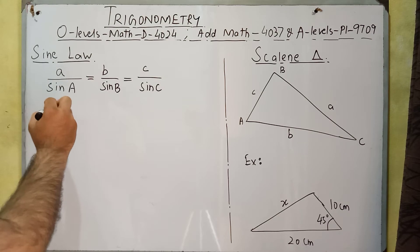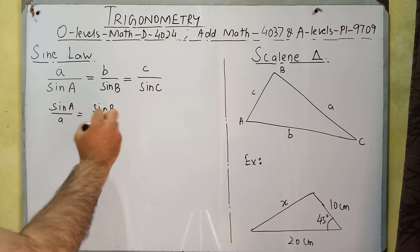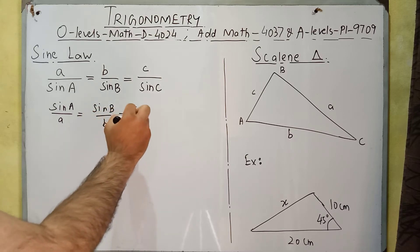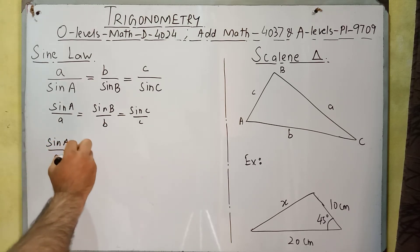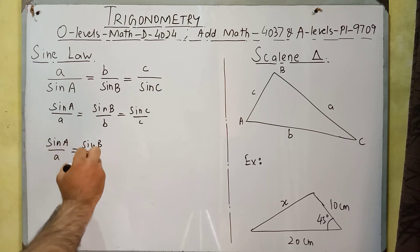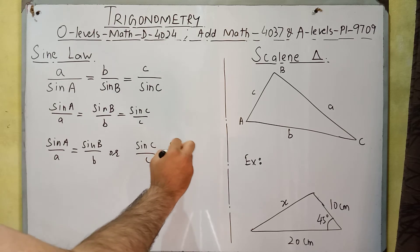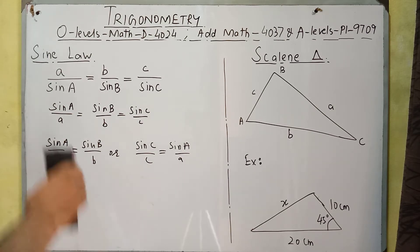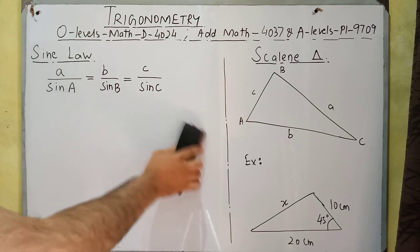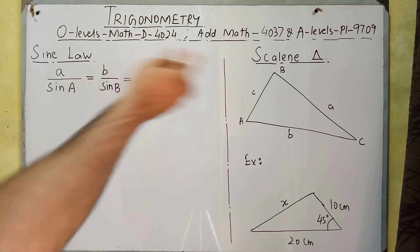We can also take the reciprocal form of these three terms: sin A over a equals sin B over b equals sin C over c. We can also write sin A over a equals sin B over b, or sin C over c equals sin A over a. We can write it in different ways — this is the sine law.